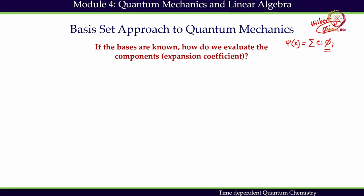That is the basic mathematical idea behind this linear combination. When you do this linear combination with respect to the phi_i basis, one can represent psi as a column matrix with components C1, C2, C3. This is for the reduced Hilbert space, where we have truncated the infinite summation to some number n. When we represent psi in basis set form, the wave function can be represented as a column matrix with respect to the phi_i basis.